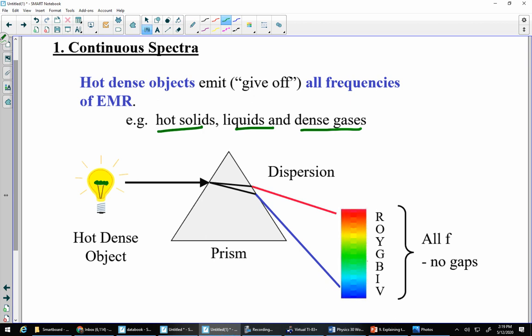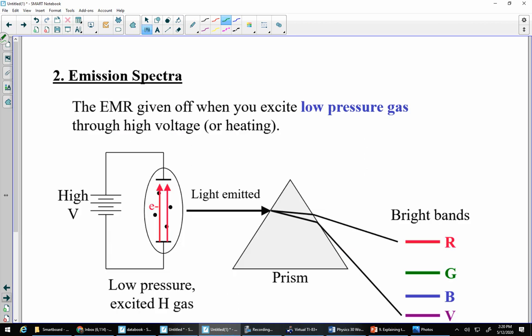And, of course, in the spectroscopes that we have in the school, ours used diffraction gratings, but you can do this with a prism just as easily. You can break it apart. You can see all frequencies of visible light with no gaps.